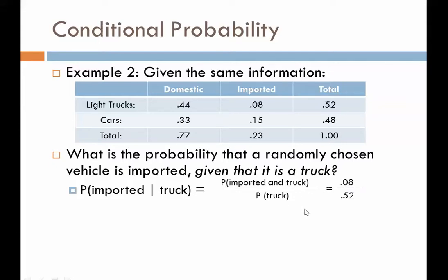The result is 8% over 52%, which means there's a 15% probability that if we know it's a truck, it would be an imported truck.